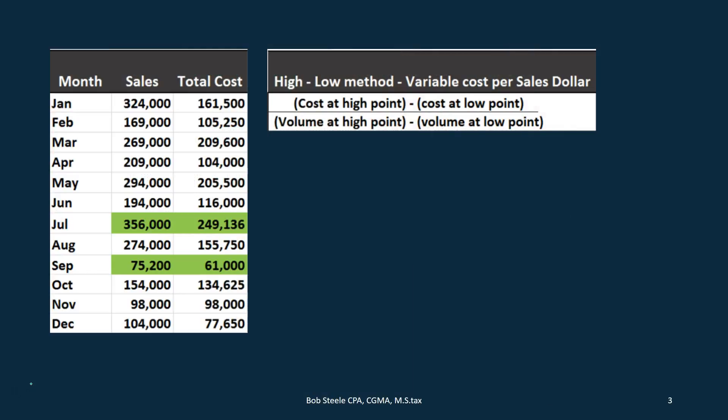We're going to work through a problem using this data set. We've got the months, we've got the sales data, we've got the total costs, and our objective — the objective of the high-low method — will be that we have the total cost here but we don't know what the variable cost or fixed cost portion of that total cost is.